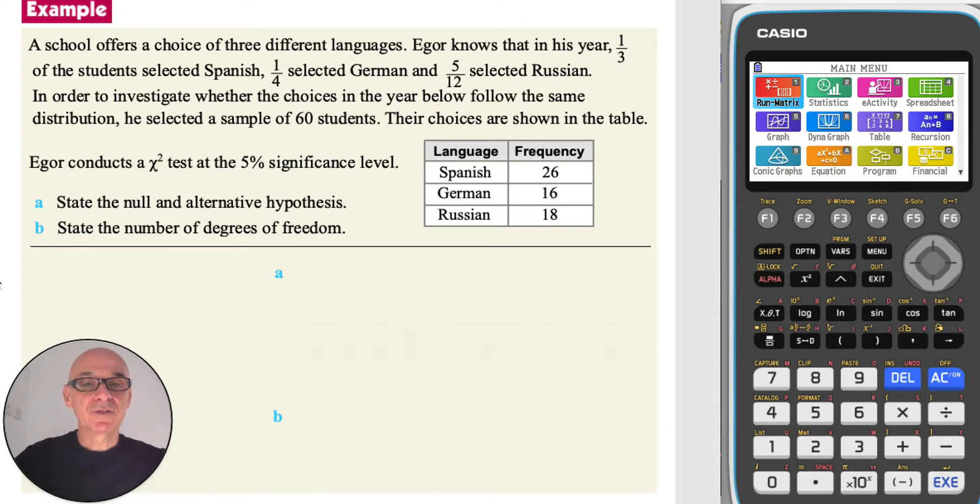In this question, Igor knows the proportions of students studying Spanish, German, and Russian in his year, and he wants to investigate whether the choices follow the same proportion in the year below. So he has selected a sample of 60 students from the year below.